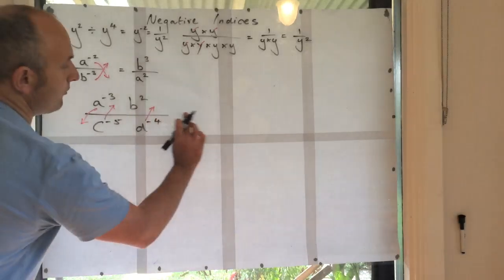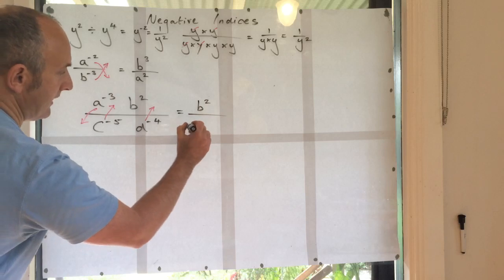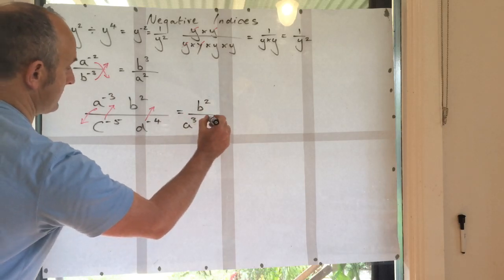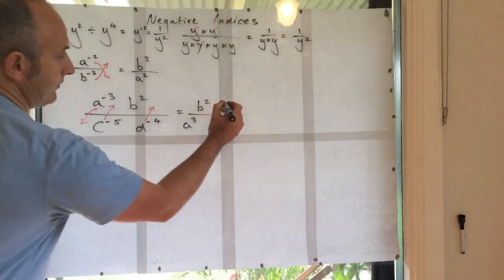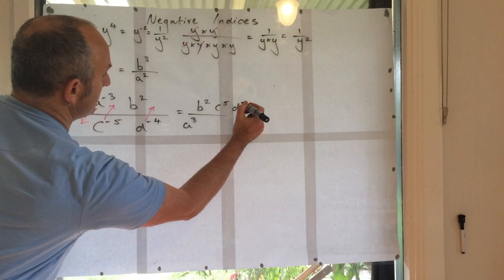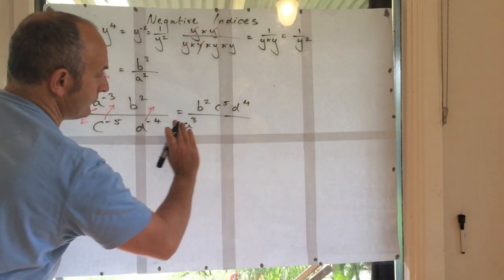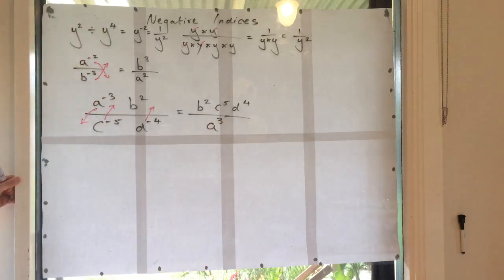So in this case, we're left with b squared over a to the 3, and also we've got c to the 5, d to the 4. Okay, I should move that along there. All right, so now let's see what else we can do with things like this.